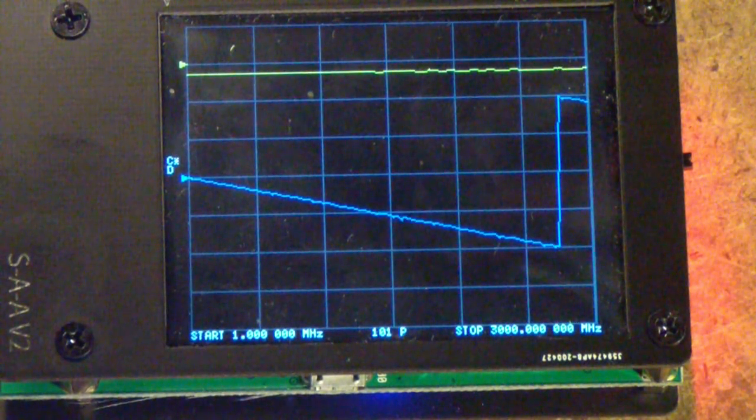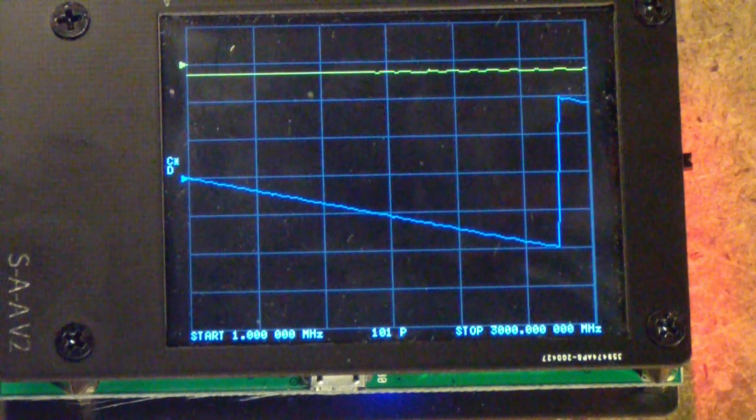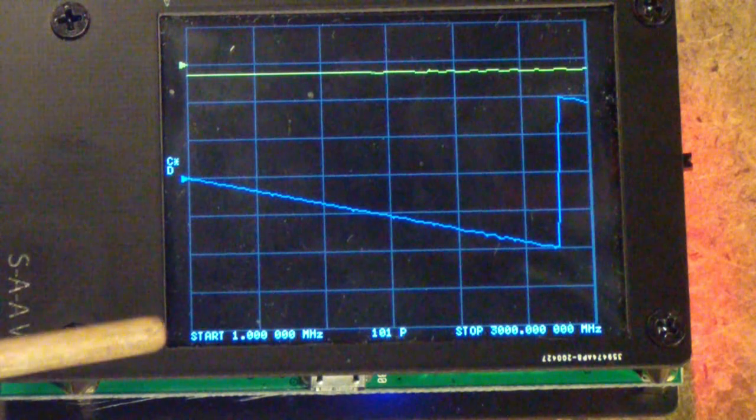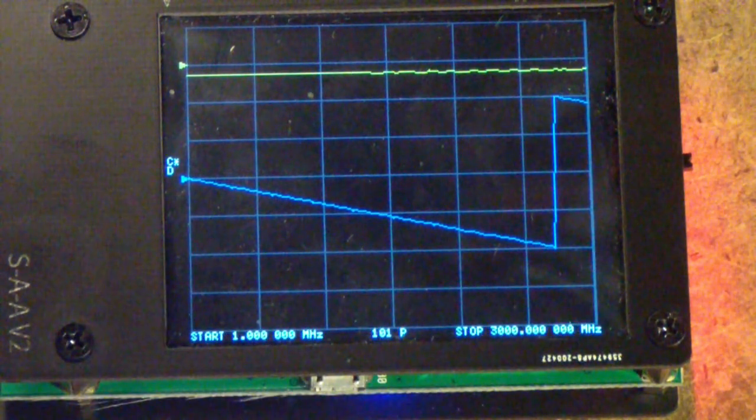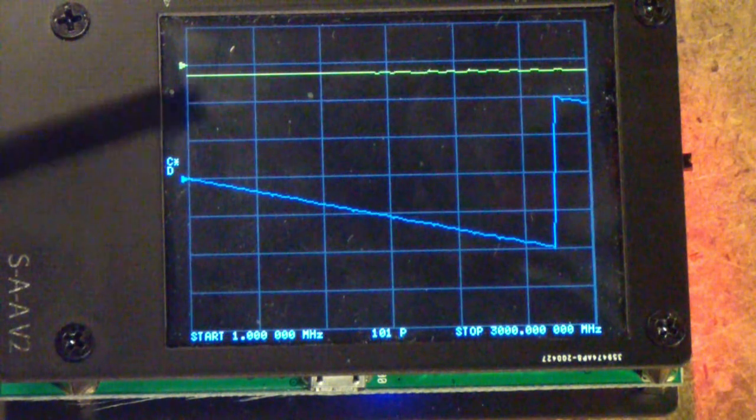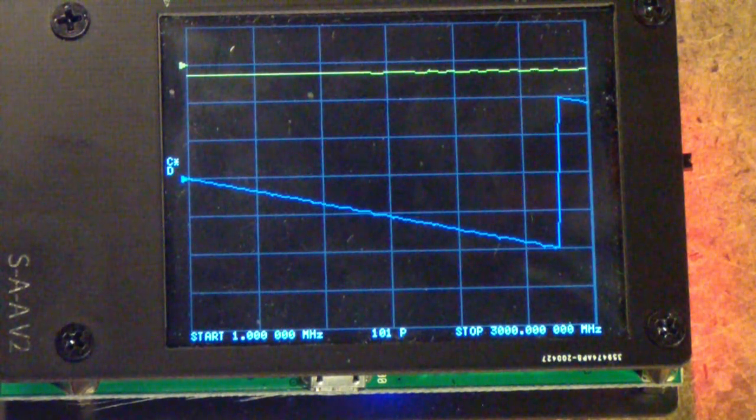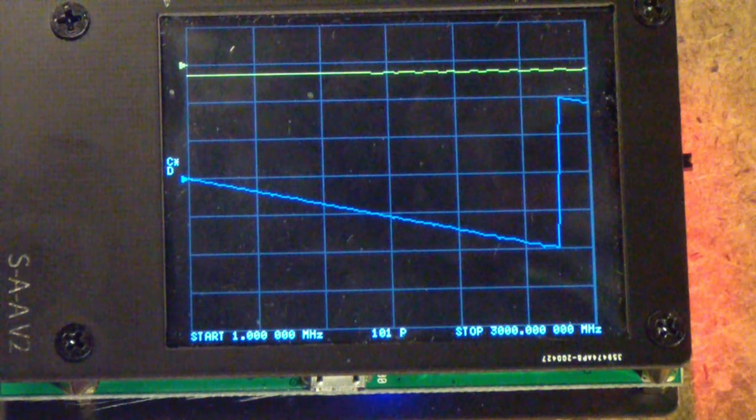And now, this is the Nano VNA V2, set also to go from a megahertz on the left to 3 gigahertz on the right. The yellow trace at the top is the log magnitude of the transmission. In other words, S21.